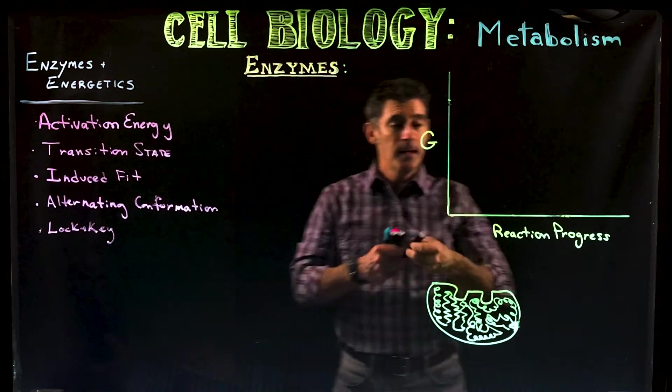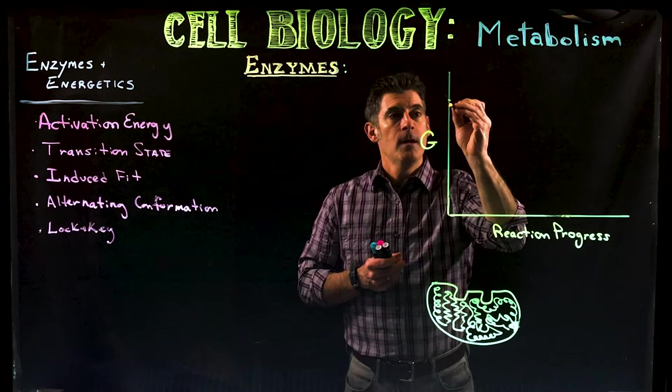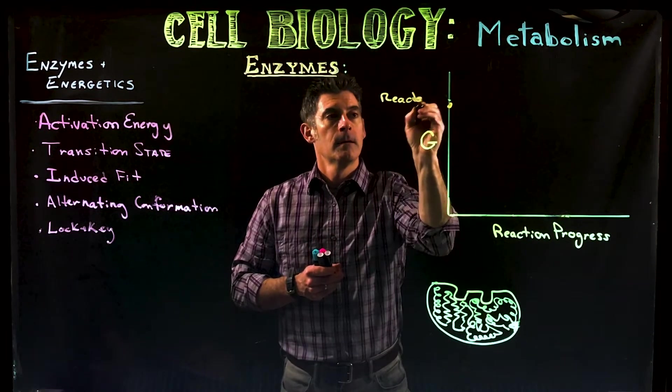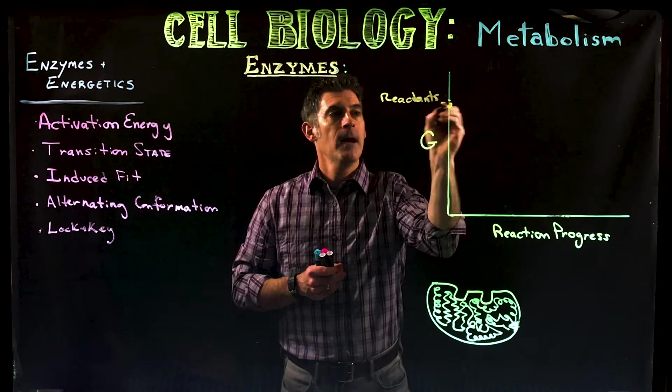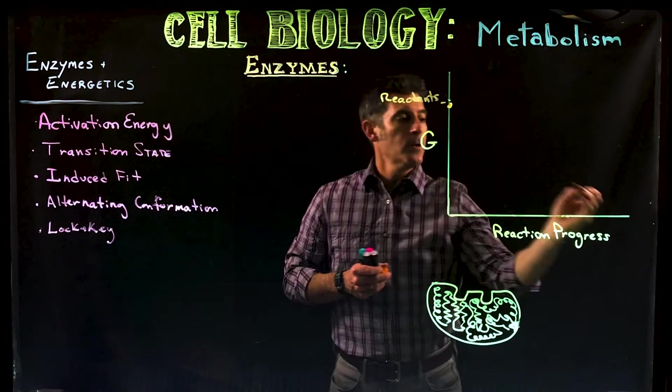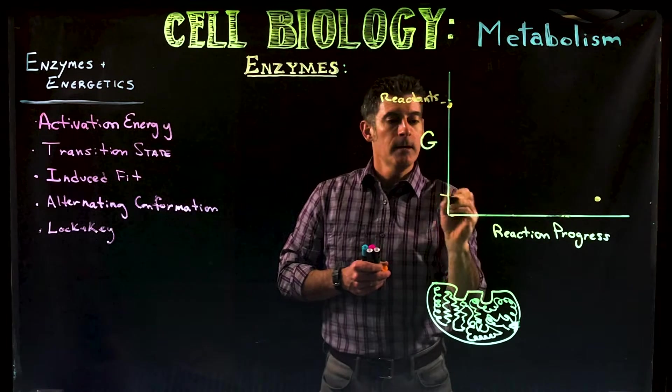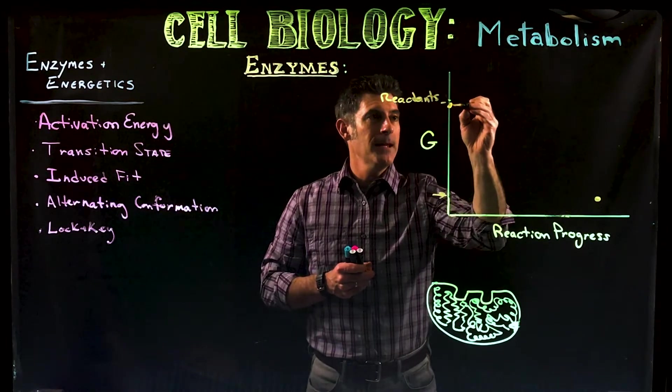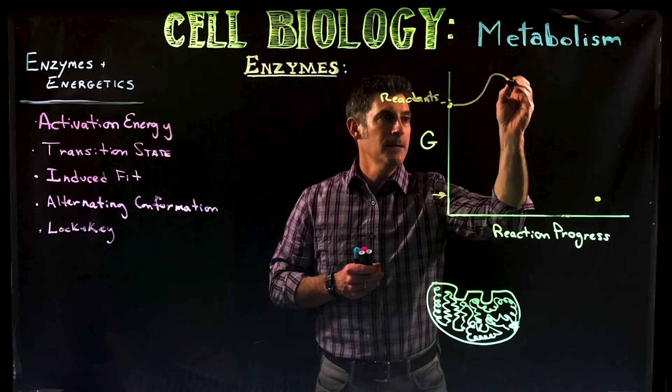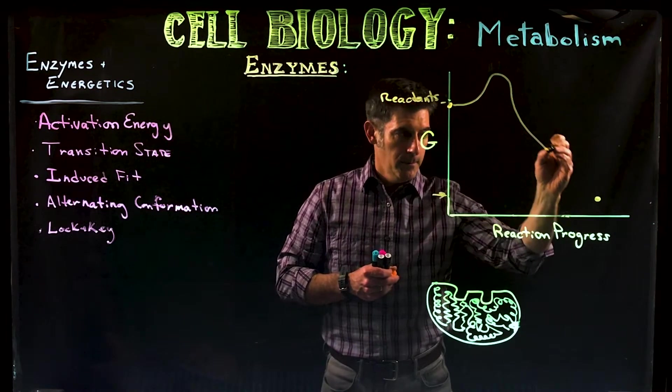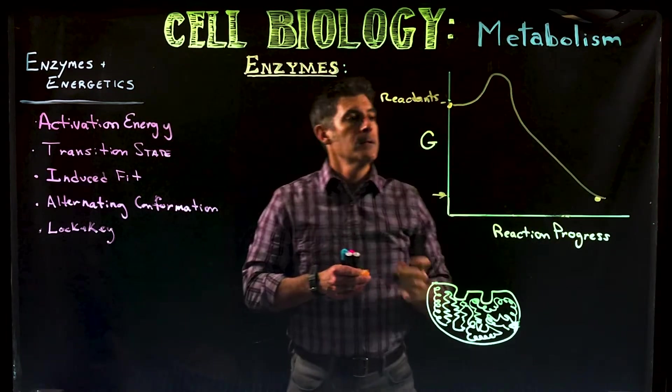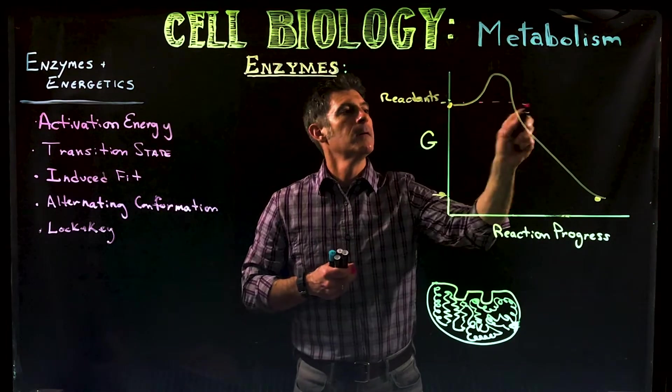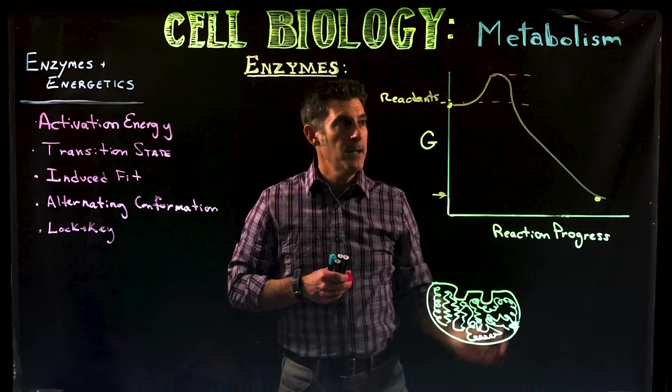So for a spontaneous reaction, you start off with reactants that have a high energy level. Those reactants are ultimately going to end up somewhere at a lower energy level, but before they get there, in our curve we look at, something that looks like this. There's going to be this little rise before the energy drops down.